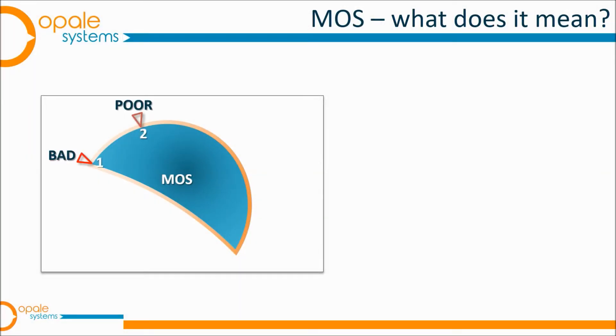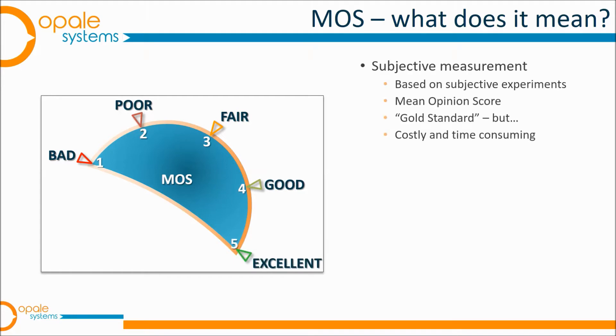And that's why we have MOS — a five point scale using simple language to describe the listening quality as perceived by ordinary people, not specialists.